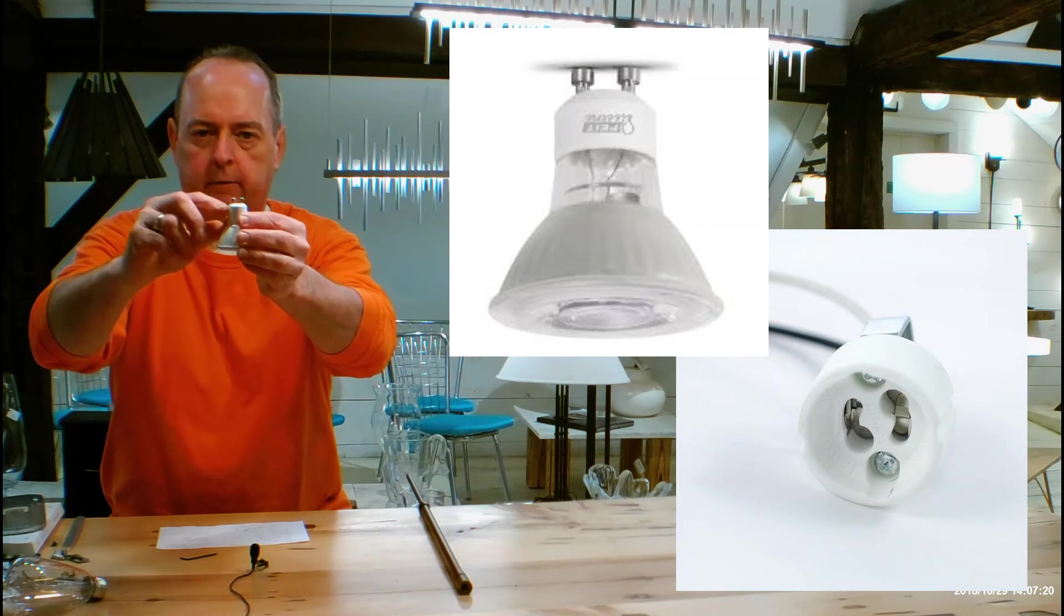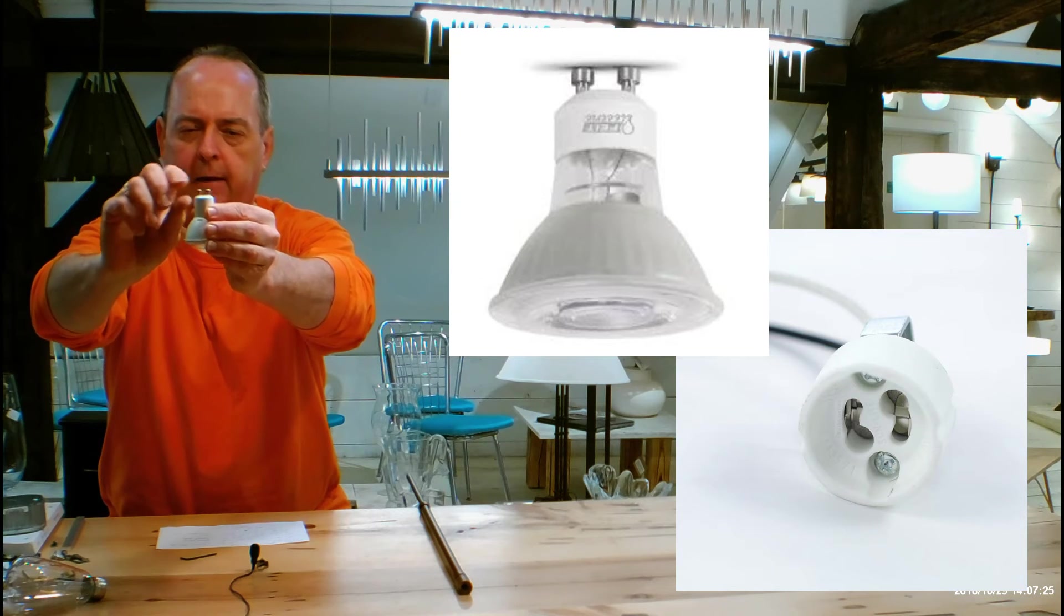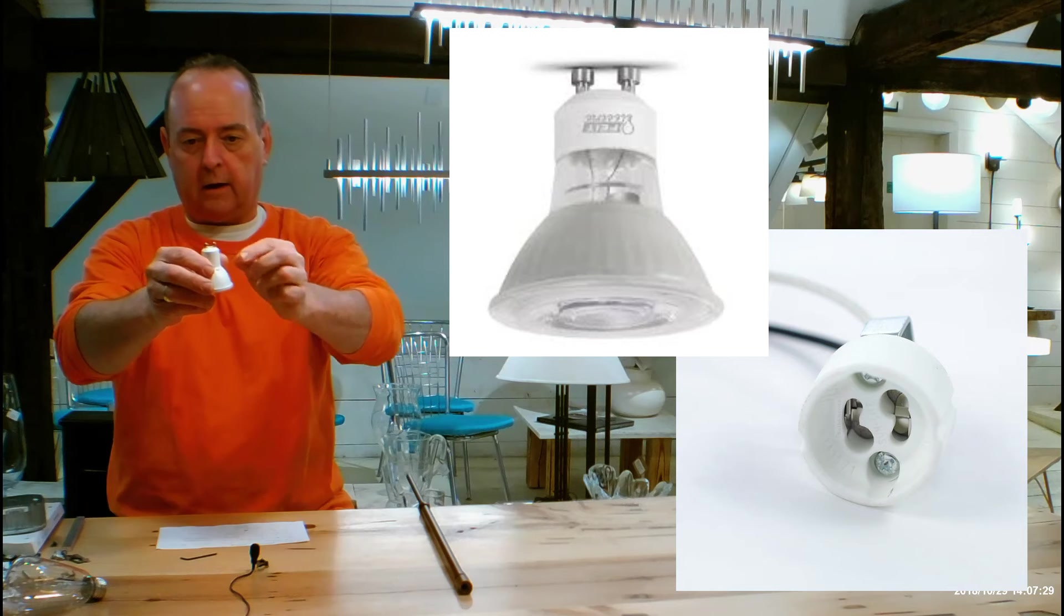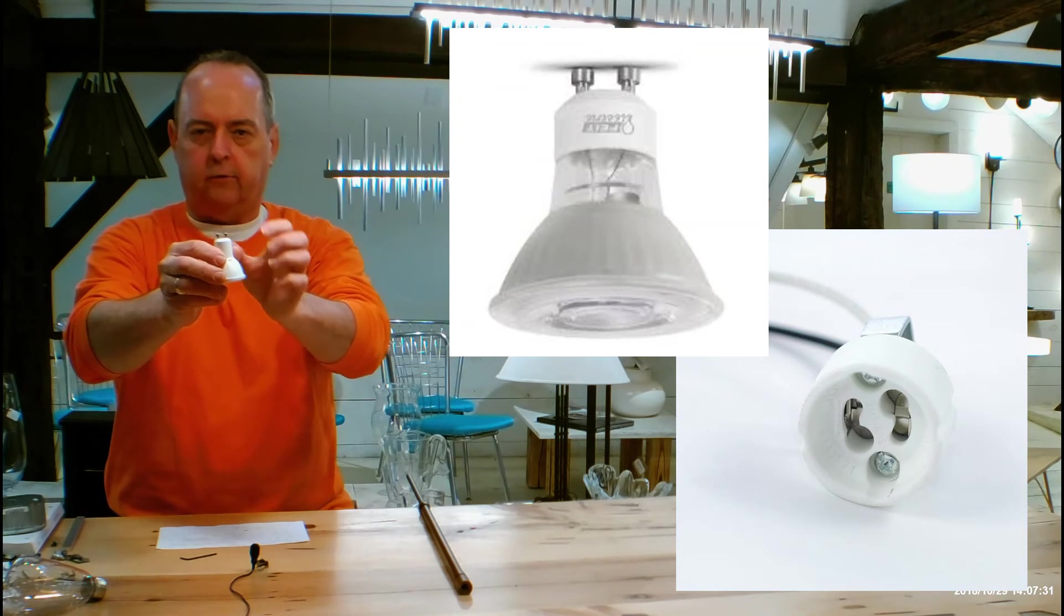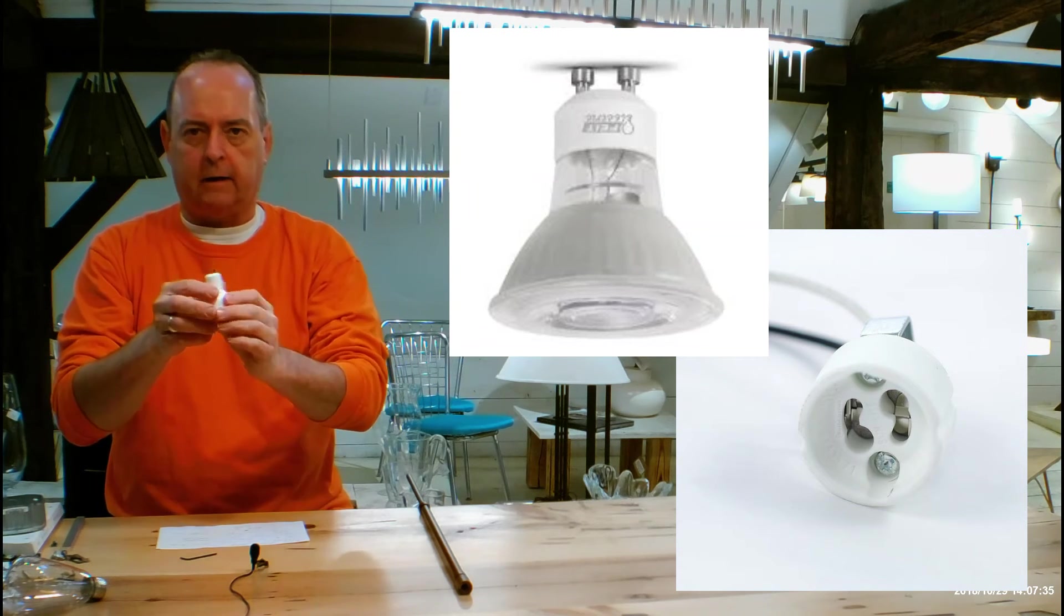The GU10 part of it are the prongs. So you see those two little prongs at the top, and they have like almost little tablets on top, so a GU10. If they're a little closer together, a GU24, they would have been a little farther apart. This is a GU10 socket setup.